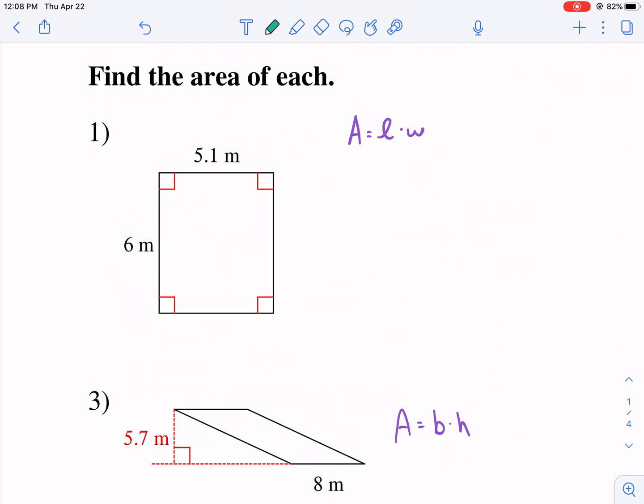Let's start with number one. We have a rectangle here and it has a length of 6 meters and a width of 5.1 meters. Now can you call the 5.1 the length and 6 the width? Yes you can. Since you're just multiplying these two dimensions, it doesn't really matter which one you call the width and length.